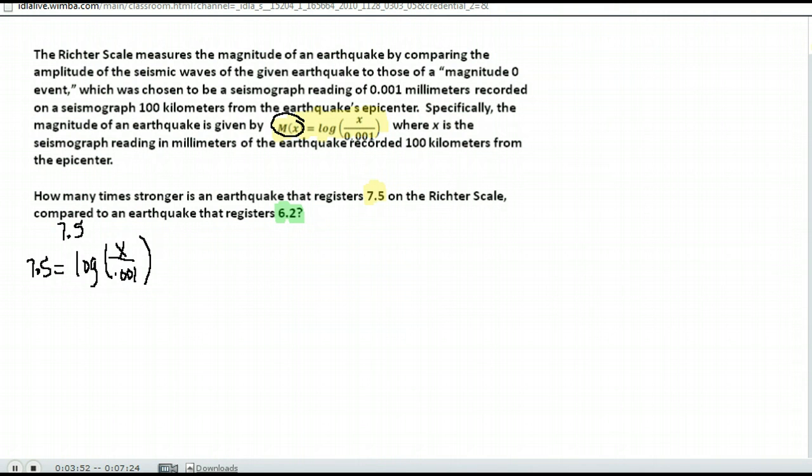Now with logarithmic equations recall that the way we solved them was to isolate the log, which we have, and then rewrite the problem in exponential form. Now this is just log. Remember that if you just have log it's automatically base 10. And to rewrite this in exponential form, this was base 10 to the 7.5 power.